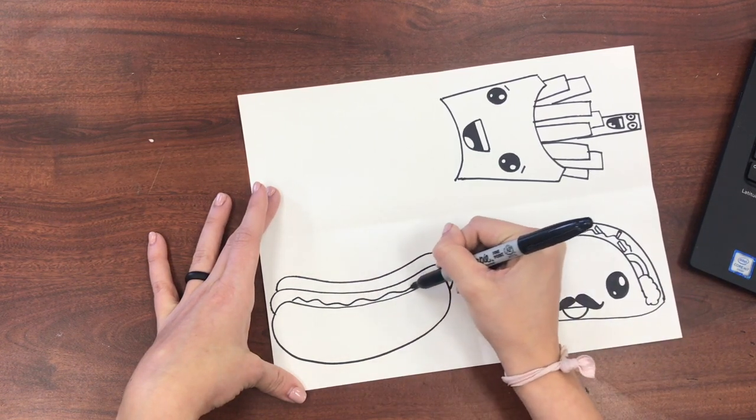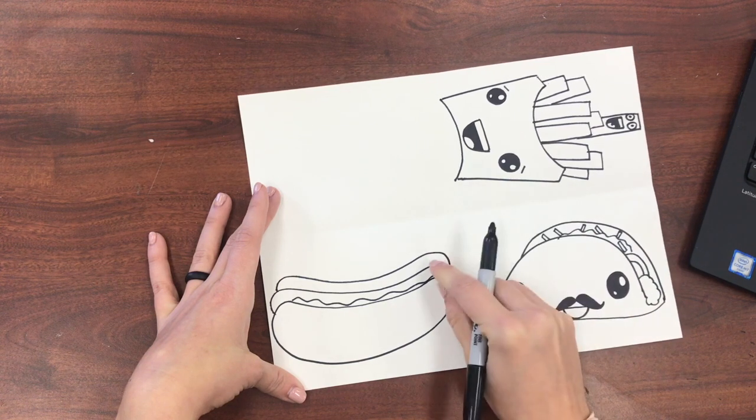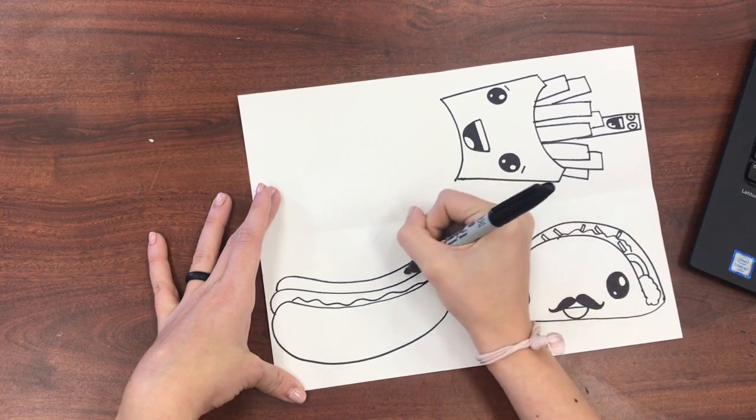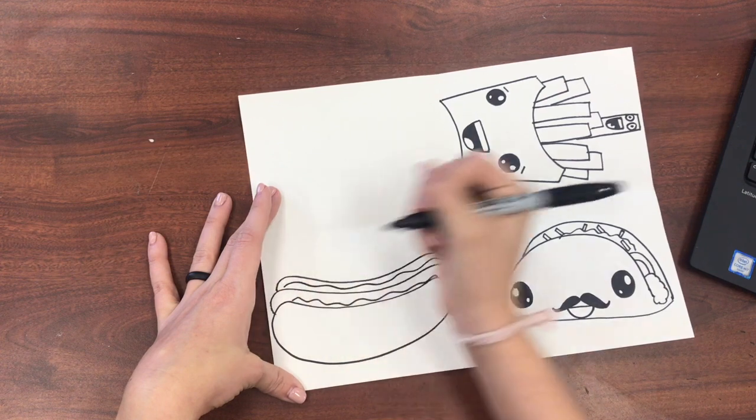I think I'll add some mustard or ketchup to this side of the hot dog and then to the other side of the hot dog. So it's just a curvy line that goes all the way across.